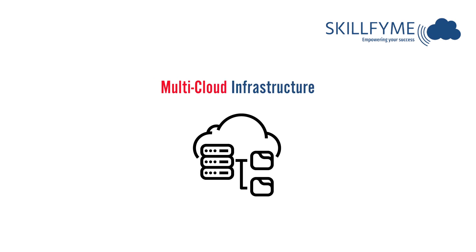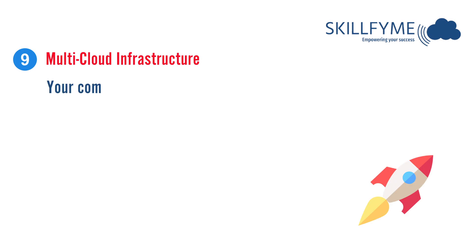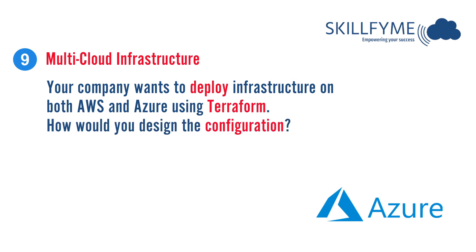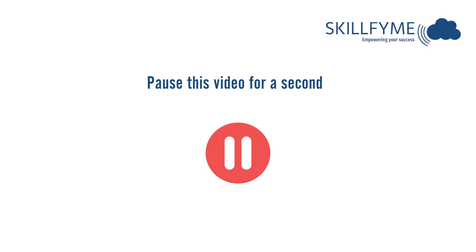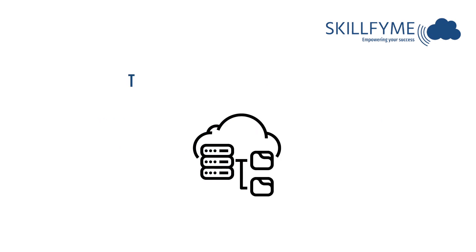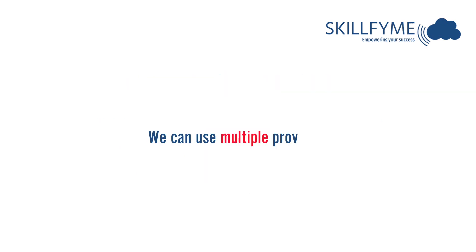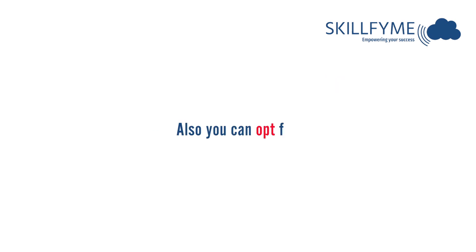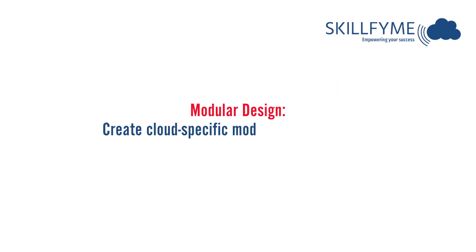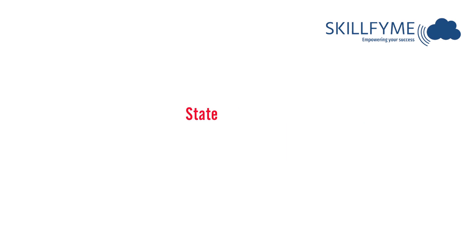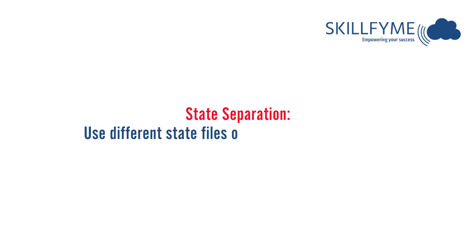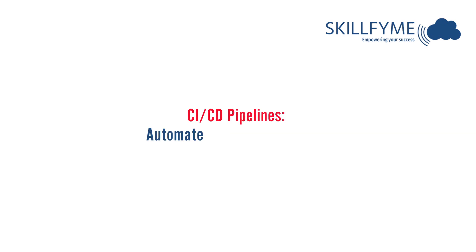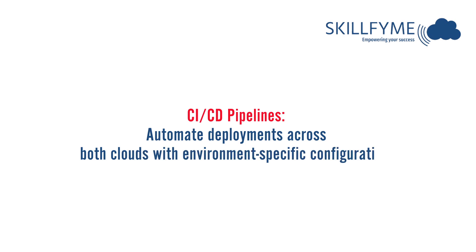The next question is related to multi-cloud infrastructure: your company wants to deploy infrastructure on both AWS and Azure using Terraform — how would you design this? Configure separate providers for AWS and Azure in the same Terraform configuration. Use modular design with cloud-specific modules to encapsulate functionality. Use different state files or backends for each cloud provider to avoid conflicts, and automate deployment across both clouds with CI/CD pipelines using environment-specific configurations.